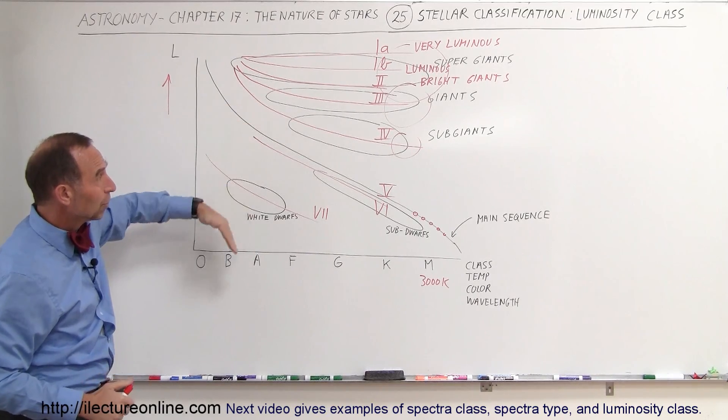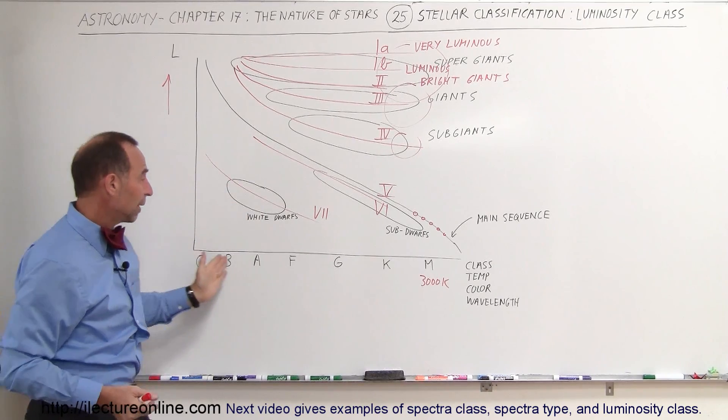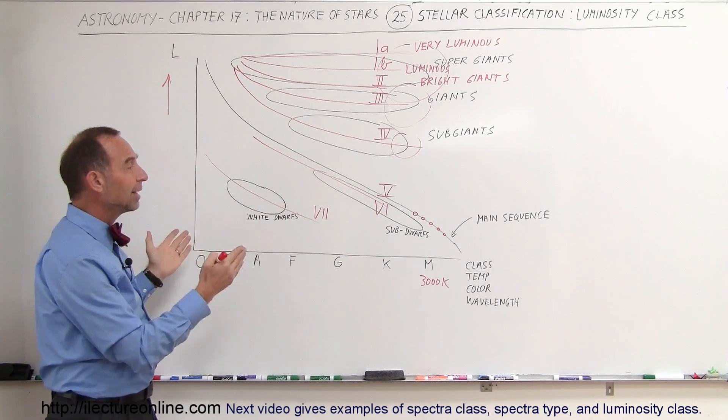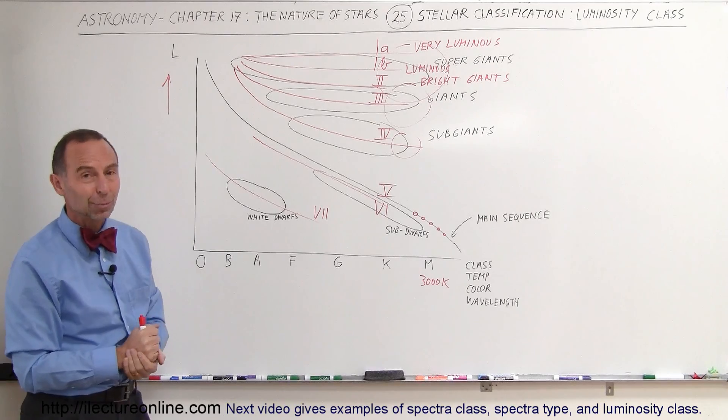So we now have what we call luminosity class. This is then combined with the spectral class and the spectral type, and from that we're able to really recognize what stars we're talking about. And so that's what we mean by the luminosity class.